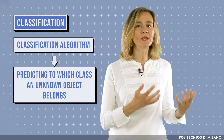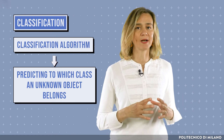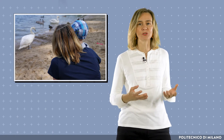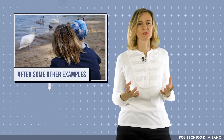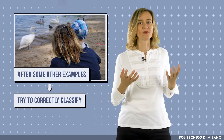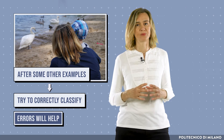Classification is a possible form of learning. A classification algorithm is capable of predicting to which class an unknown object belongs, by choosing from a set of known classes. This mechanism is similar to that of a child who wants to learn the animals in a zoo. At the beginning, her teacher will show her the animals and say, this is a swan, this is a duck. Then after some other examples, the child will try to correctly classify new animals. Errors will help her to improve this learning process.